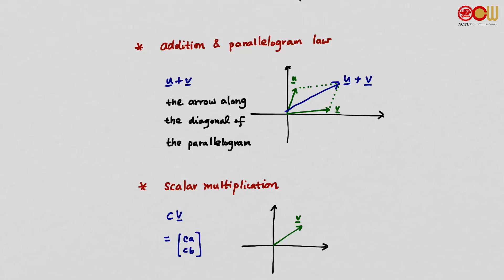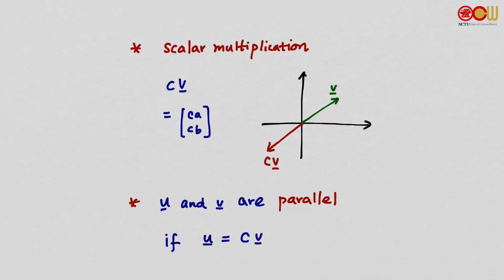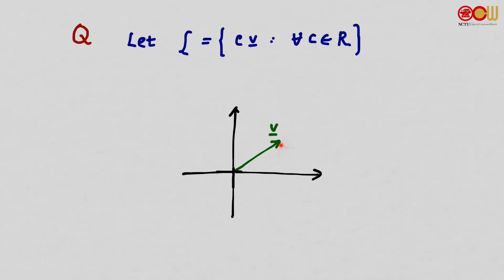It is also very easy to see a scalar multiple of a vector: c·v = [ca, cb]. Suppose we have vector v — then cv will simply be a vector along the line formed by v. Here I have drawn an example when c is a negative number. We say two vectors u and v are parallel if u is a scalar multiple of v. A question: let L be the collection of all scalar multiples of v — the set {cv : c in R}. What would L be? L is the collection of all points on the line formed by vector v, so it is simply the whole line through the origin formed by v.